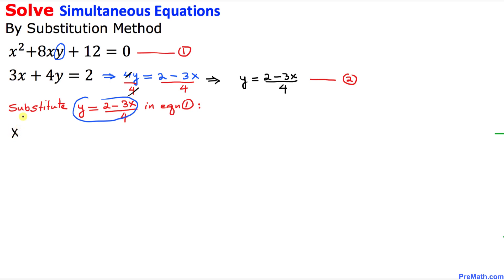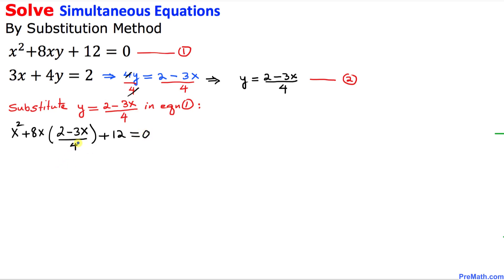Equation number 1 becomes x squared plus 8x, and this y I am going to replace by (2 minus 3x) divided by 4, plus 12 equal to 0. In the next step, this 4 and 8 reduce — 4 goes into 8 twice — so we end up with x squared plus 2x times (2 minus 3x) plus 12 equal to 0.